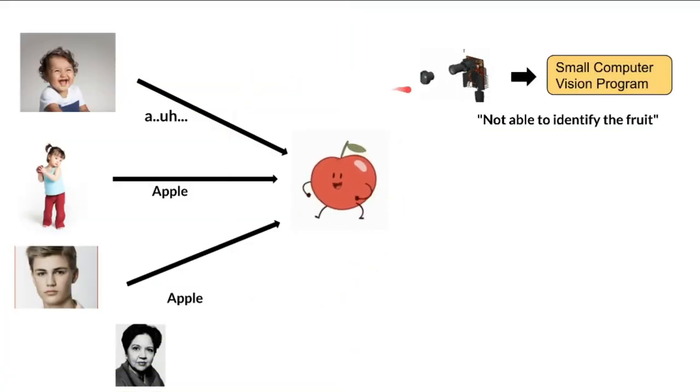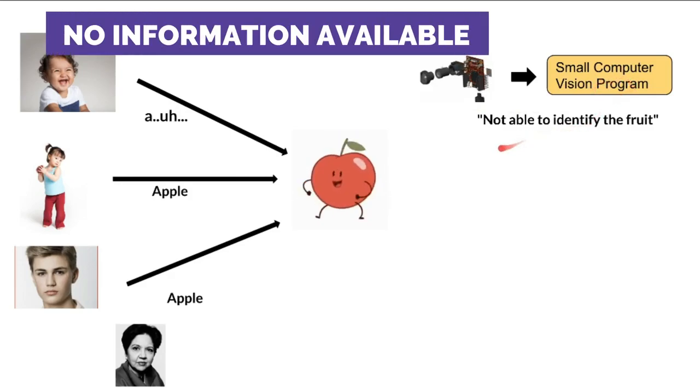Let's compare this scenario with a program. For example, I have written a small computer vision program that does not have much information—it's connected to a camera. I'm going to show this apple picture to the camera and ask for the output. It says 'not able to identify the fruit' because the camera can see the apple image, but there's not enough information inside this program to process and give me a proper output.